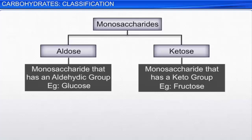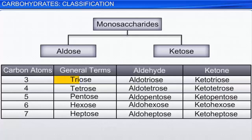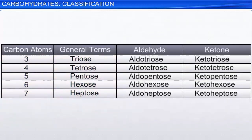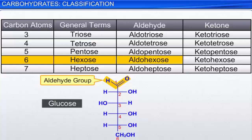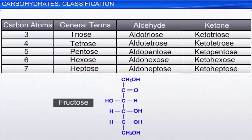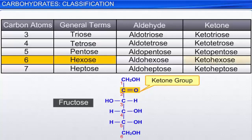Aldoses and ketoses can be further classified on the basis of the number of carbon atoms present. The prefixes tri, tetra, etc. with the ending -ose indicates the number of carbon atoms present. For example, glucose is a monosaccharide that has six carbon atoms with an aldehydic functional group; hence it is an aldohexose. Similarly, fructose is a monosaccharide that has six carbon atoms with a keto functional group; hence it is a ketohexose.